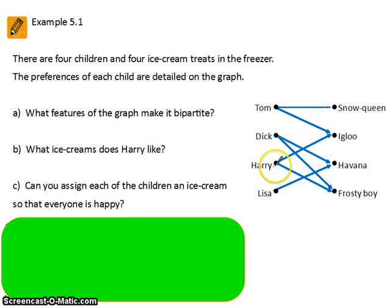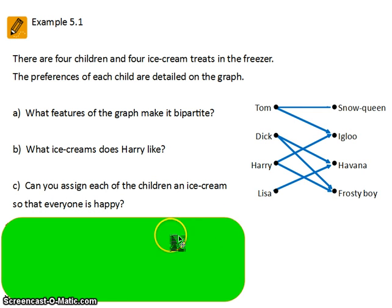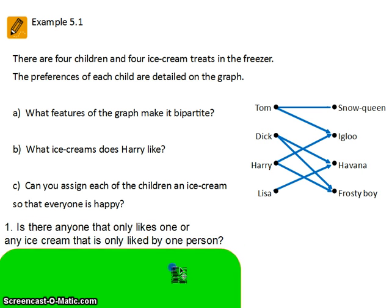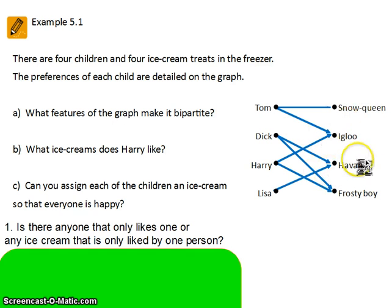What ice creams does Harry like? We can see that Harry likes both Igloo and Frosty Boy. The question is: can we assign each of the children an ice cream so that everyone is happy? The way to do this is to take a logical approach. Our first question should be: is there anyone on the left hand side that only likes one ice cream, or are there any ice creams that are only liked by one person?